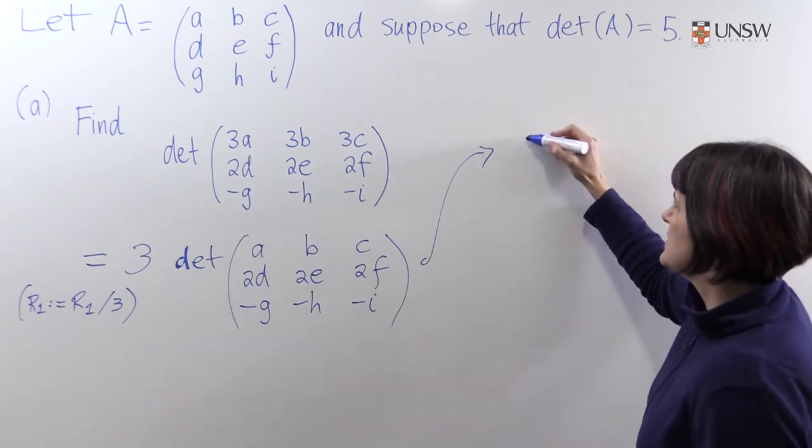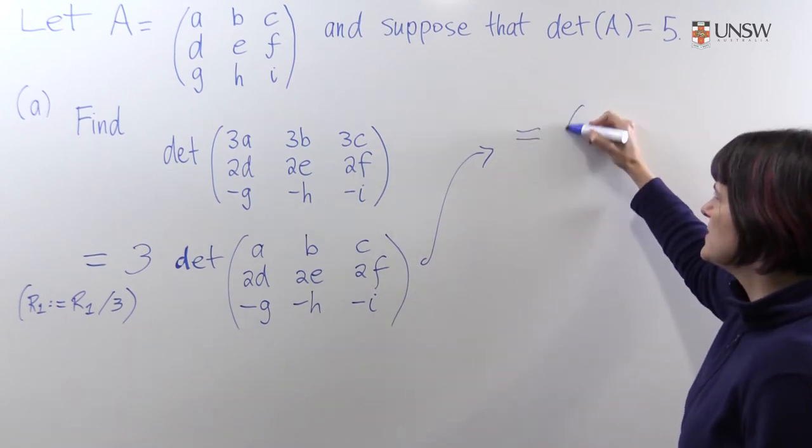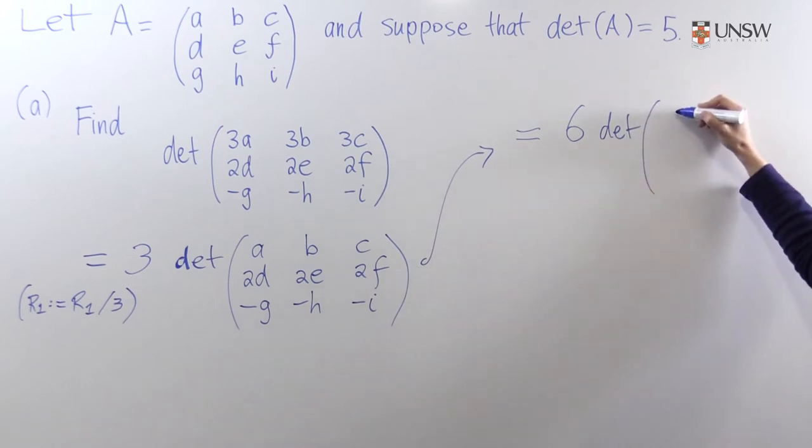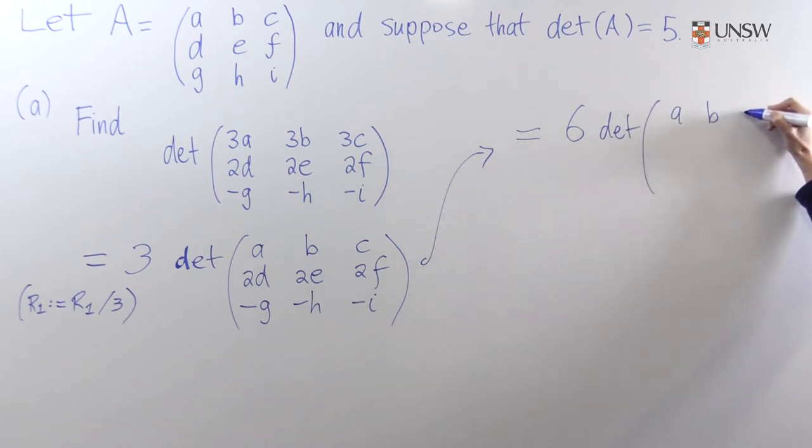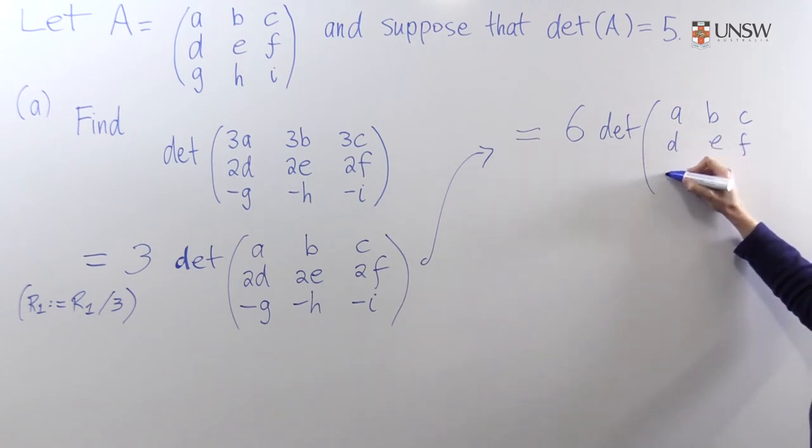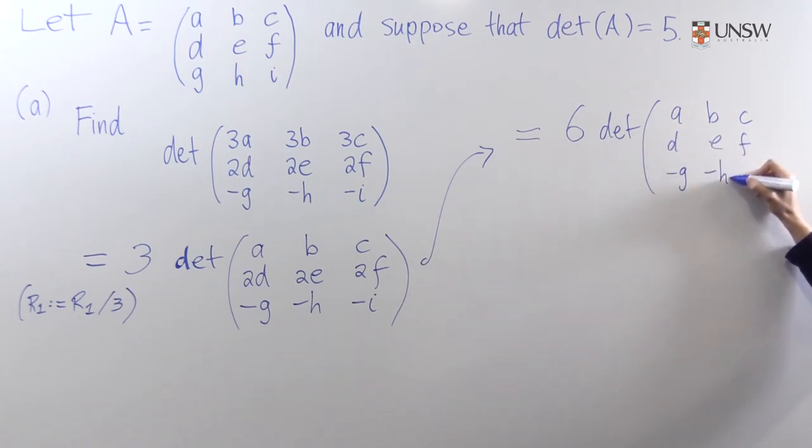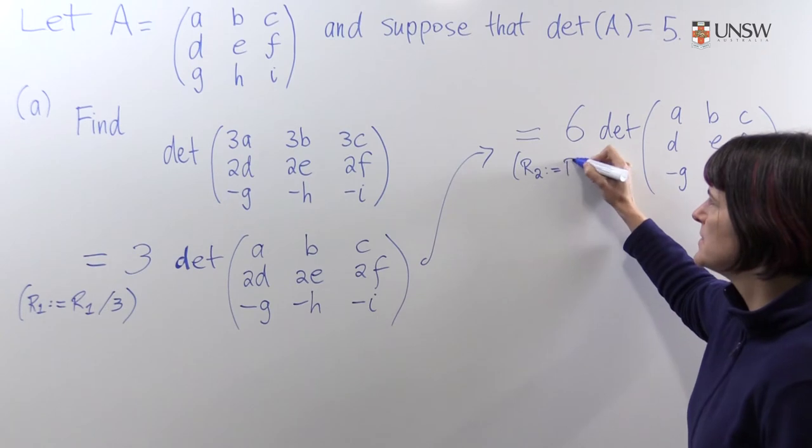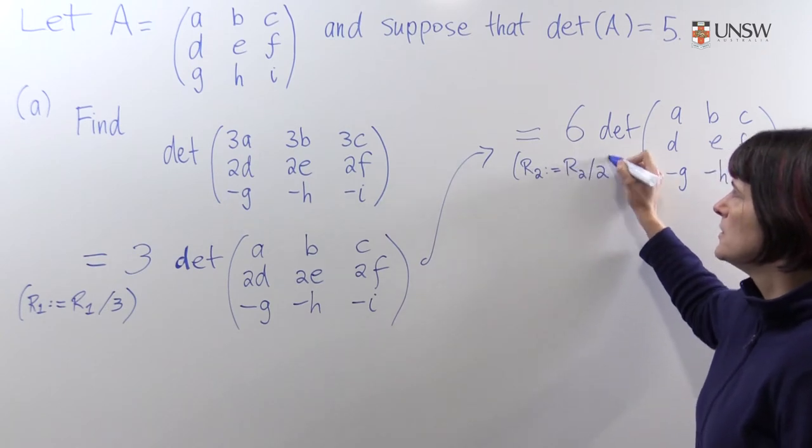So this is equal to six times the determinant of the matrix A, B, C, D, E, F, minus G, minus H, minus I, and the operation we did was R2 becomes R2 divided by two.